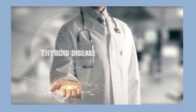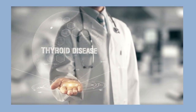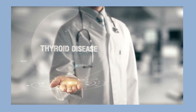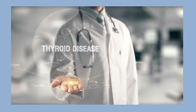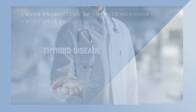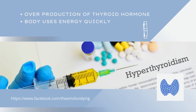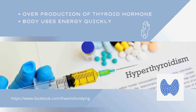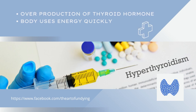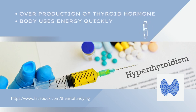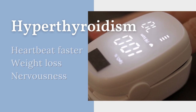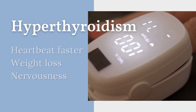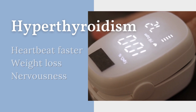Thyroid disease is a general term for any medical condition that keeps your thyroid from making the right amount of hormones. When the thyroid makes too much thyroid hormone, your body uses energy too quickly — this is called hyperthyroidism. In this condition you will always feel tired, your heartbeat can become faster, you will experience weight loss without trying, and you will typically feel nervous.